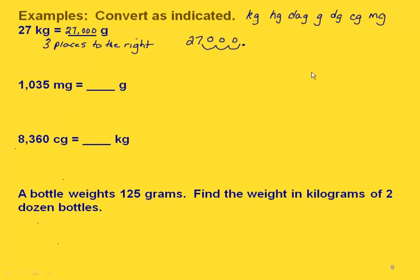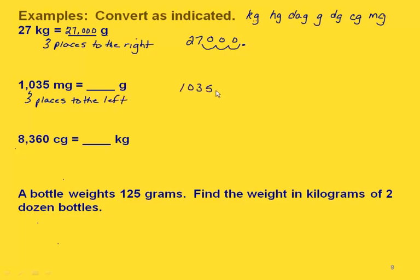Now we're going from milligrams to grams. Starting at milligrams, we count one, two, three places to the left. We have 1,035 — the decimal point starts after the 5 — and we move one, two, three places to the left. That gives us 1.035 grams.